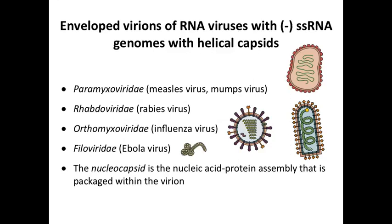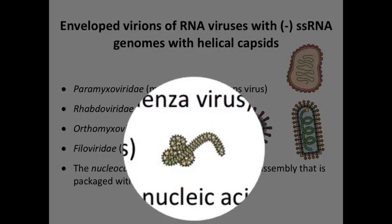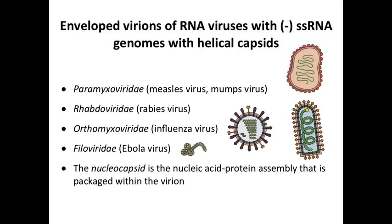Here are examples of animal viruses with helical nucleocapsids — measles virus, rabies virus, influenza virus, and Ebola virus. All of their genomes are arranged as a nucleocapsid with helical symmetry, packaged within an enveloped virus particle. None of the animal viruses with helical symmetry have naked helical genomes; they all have an envelope around them.